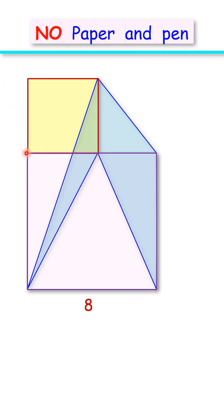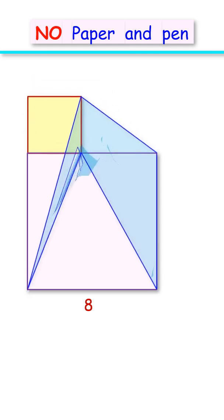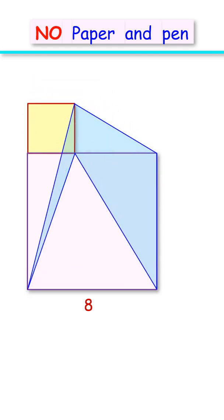For our convenience, let's reduce the size of the yellow square. Here also, the original condition of the figure is the same. The blue shaded region is formed by joining exactly the same vertex.